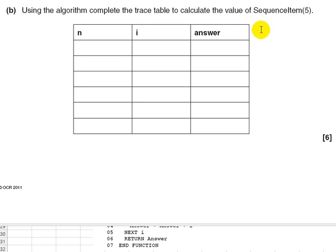We are going to have a look at this algorithm by completing a trace table. This was actually question B in the OCR exam question. Using the algorithm, complete the trace table to calculate the value of sequence item in brackets 5.